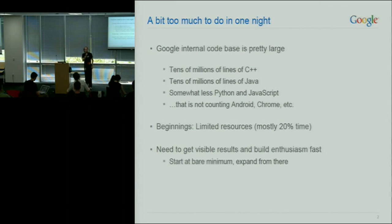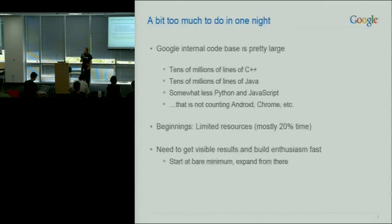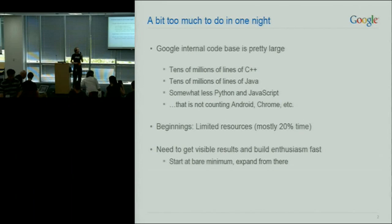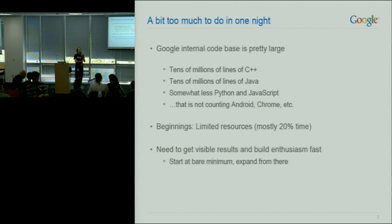This does not count a few external things — Android is not part of this, Chrome is not part of it. This is a bottom-up effort. It's not management coming down from above saying 'do IPv6.' This is something people started doing by themselves because they thought it was a good idea.